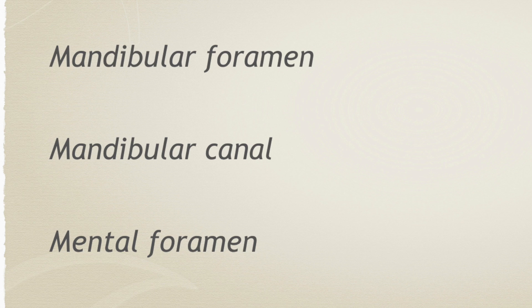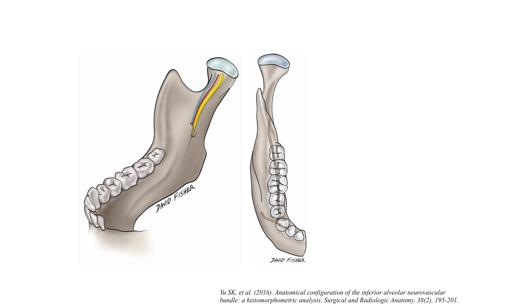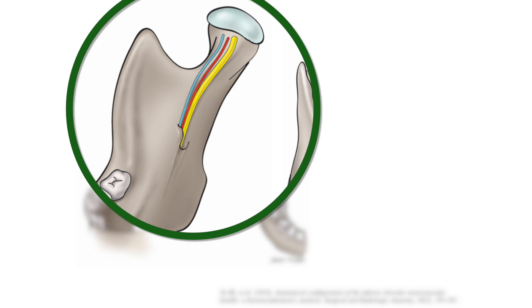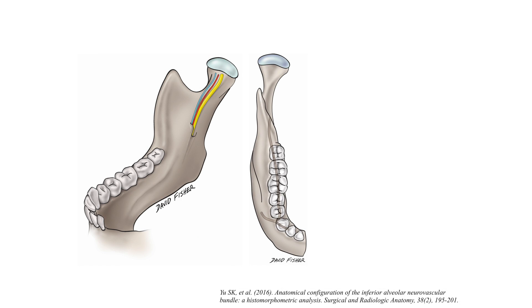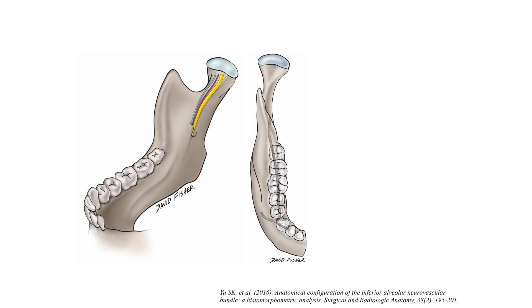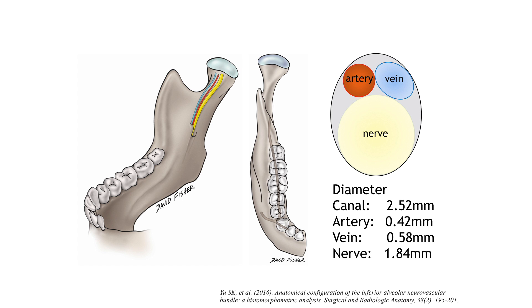Endodontic treatment and surgery for mandibular teeth always require knowledge of anatomy. Especially the mandibular foramen and canal and mental foramen are really clinically significant as you have already known. First, I will talk about normal anatomy and then secondly, I will talk about variations. The inferior alveolar nerve, artery and vein enter the mandibular foramen and then run obliquely downward in the mandibular ramus and horizontally in the body. The other important normal anatomy is the diameter of each structure inside the canal. Although many textbooks describe the artery and vein as if they were the thickest boundary of the canal, the truth is the nerve is the thickest boundary of the canal.